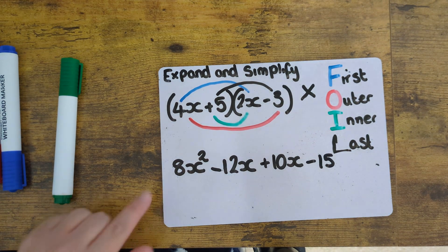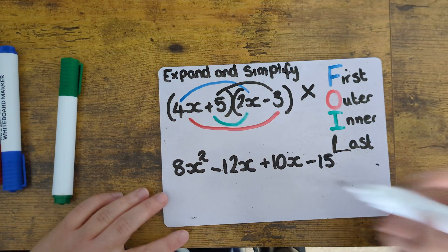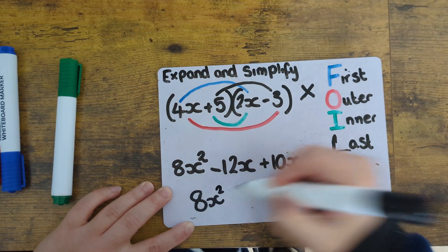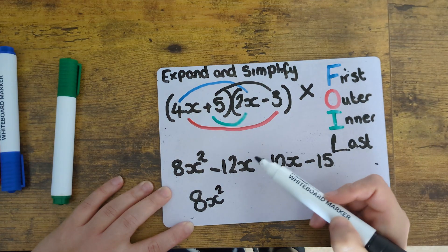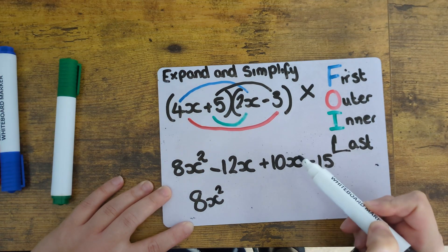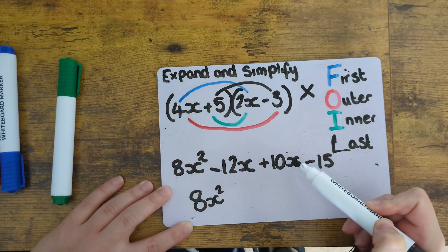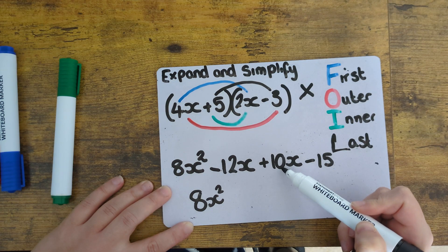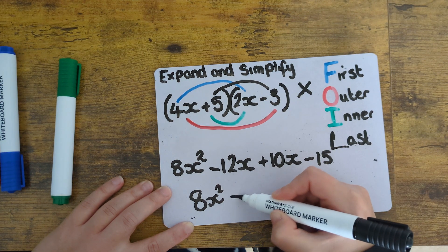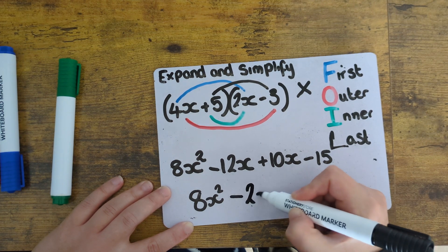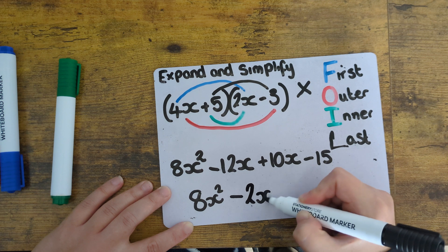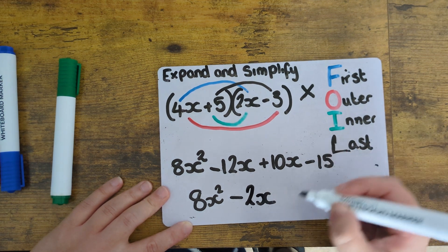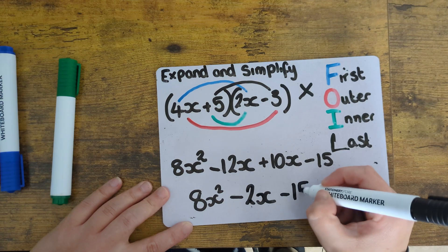Now onto the simplifying. The 8x squared can't go with anything else as there's no other squares or indices. Now we need to do minus 12x plus 10x — minus 12 plus 10 would be minus 2, so together that's minus 2x. And then the minus 15 can't be joined with anything else, so it stays as minus 15.